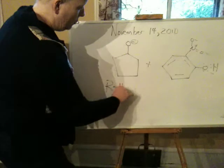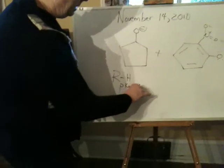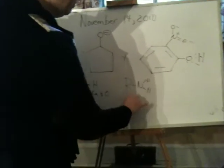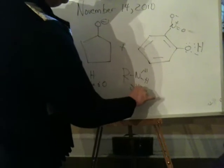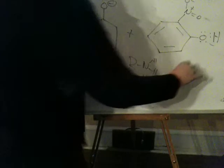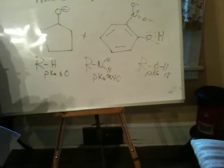To demonstrate that: if you have a normal alkane, the PKa is around 60. If you go to an amine, the PKa is around 40. And if you go to an alcohol, the PKa is around 18. That's a big effect — just changing the atom makes a big difference.